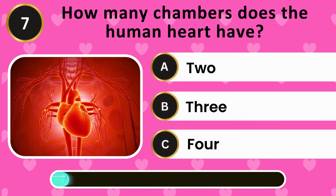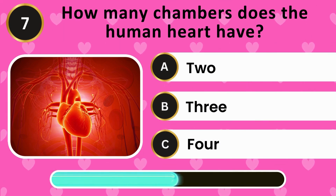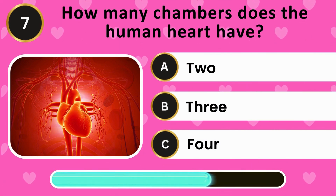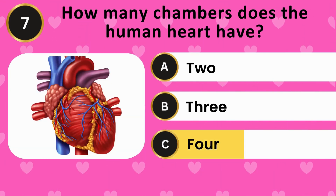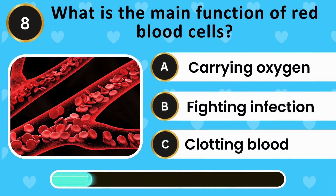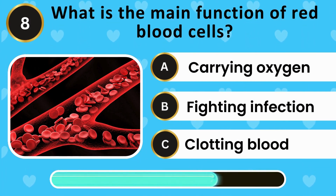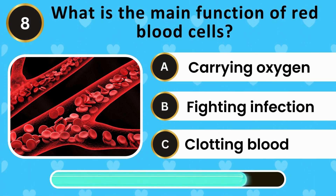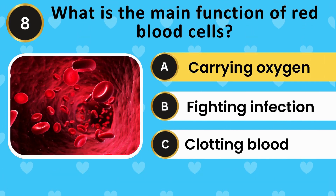How many chambers does the human heart have? Two, three, four. What is the main function of red blood cells? Carrying oxygen, fighting infection, clotting blood. The answer is carrying oxygen.